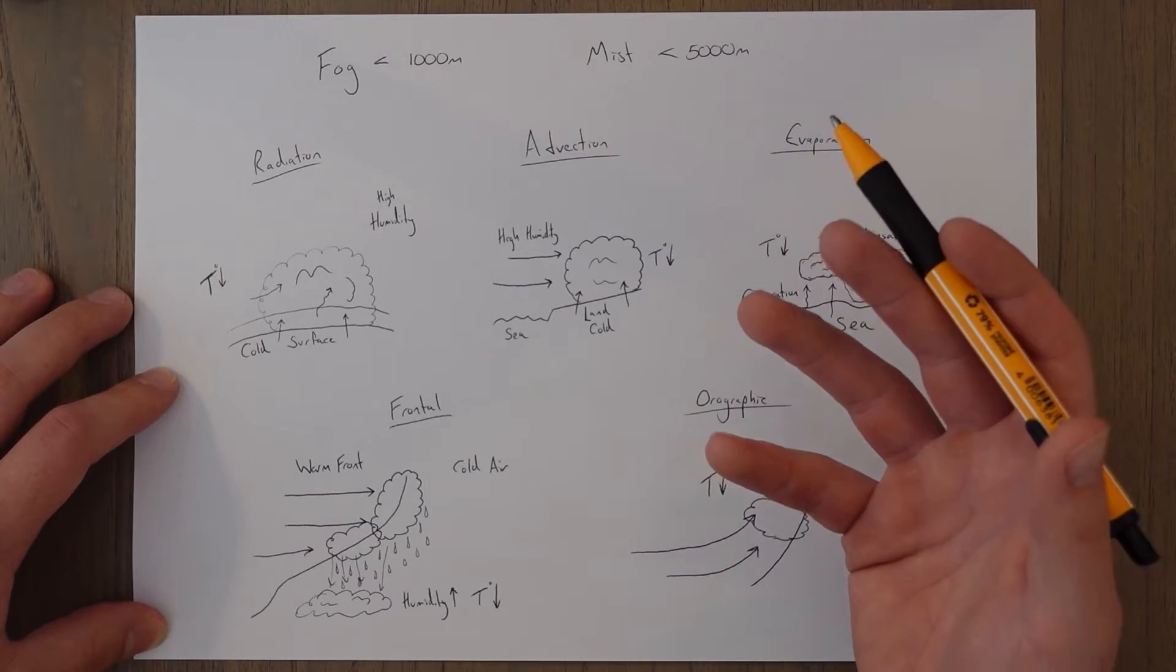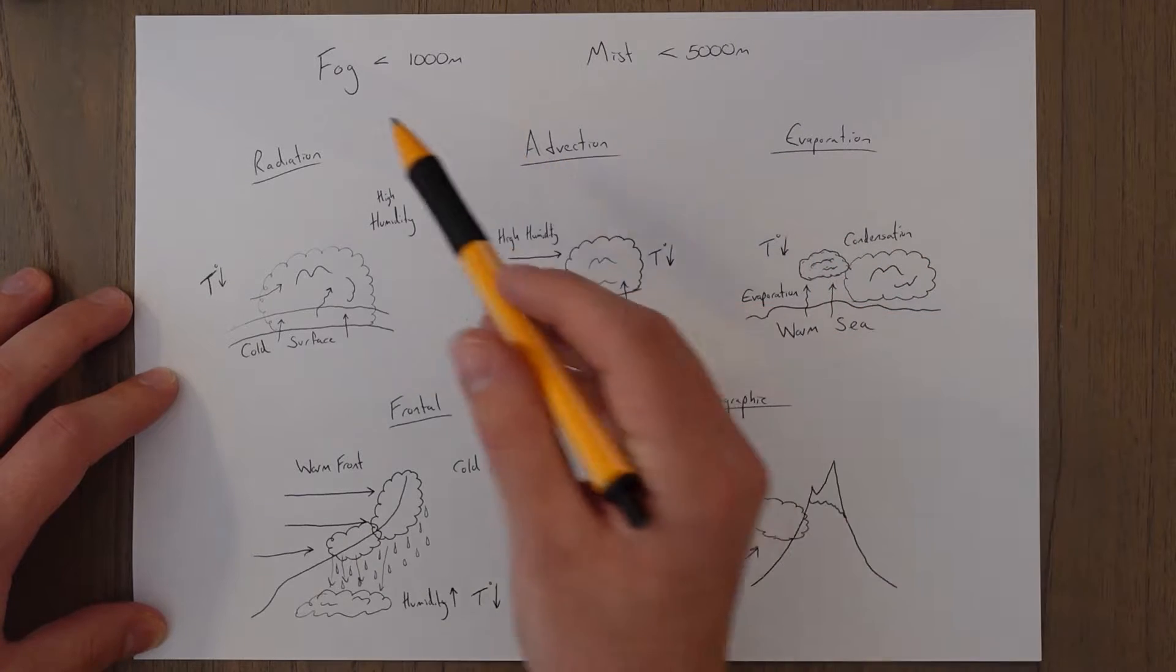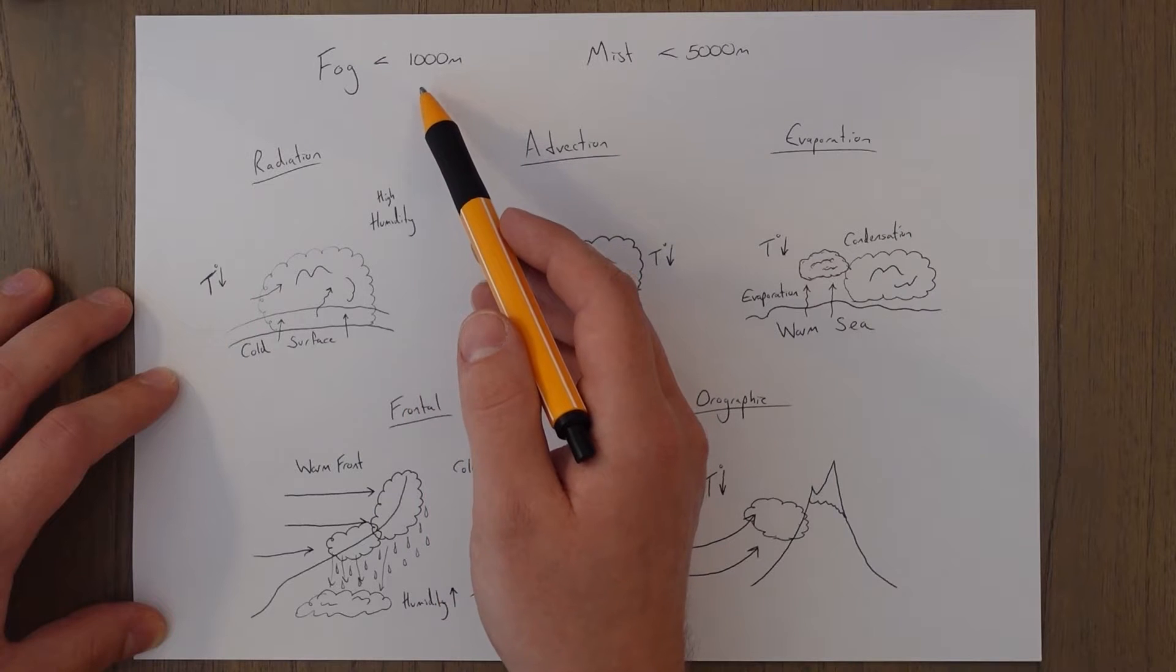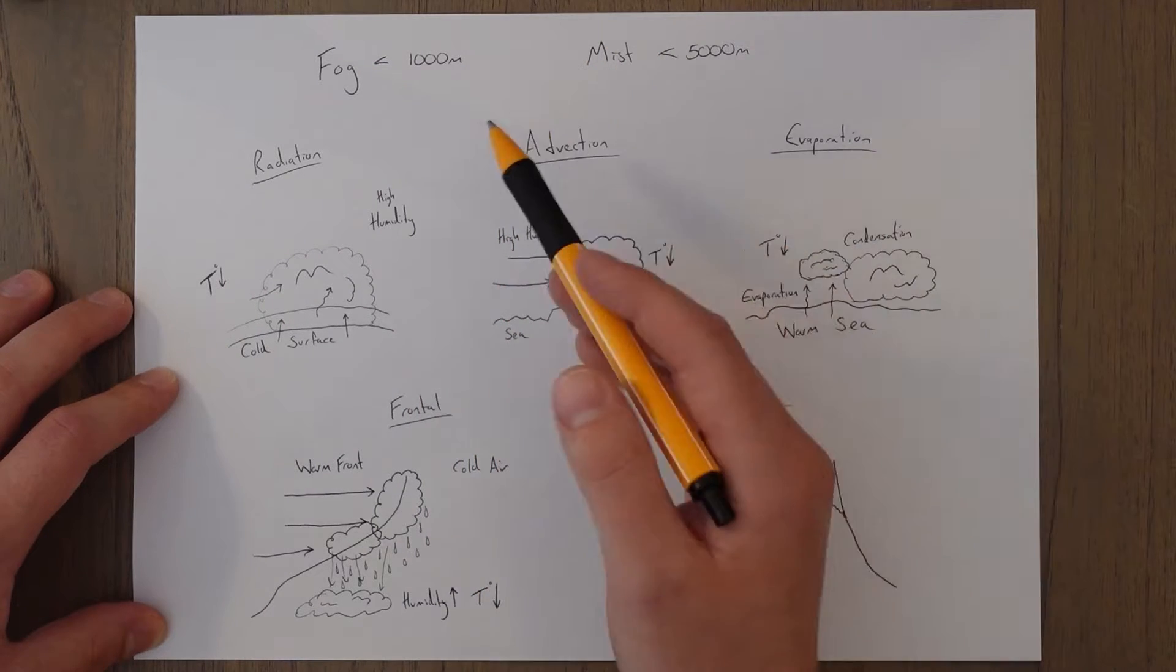This means that we are most interested in the clouds that are at ground level, which is what we call fog or mist. Fog is when you have visibility which is less than a thousand meters and mist is when it's less than five thousand meters. That's the only difference between the two.